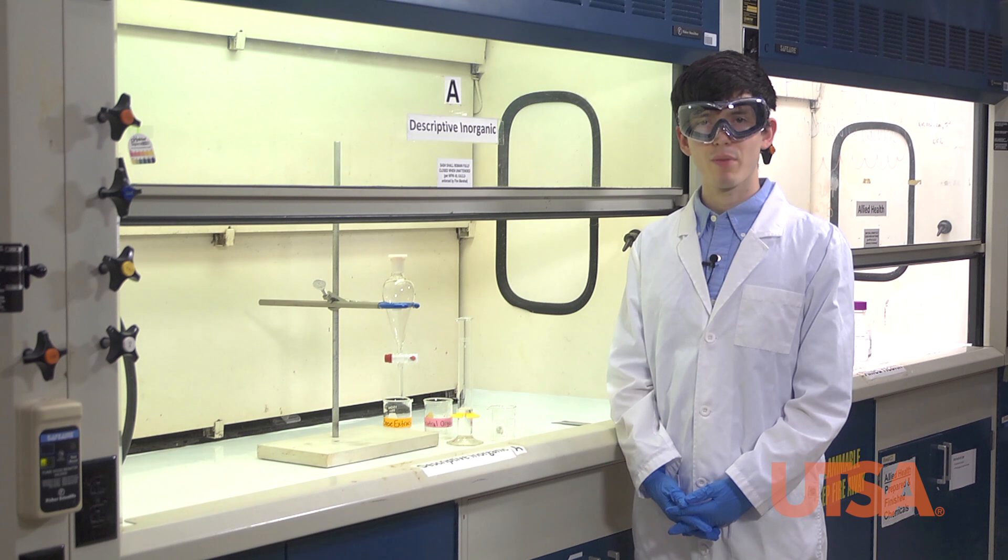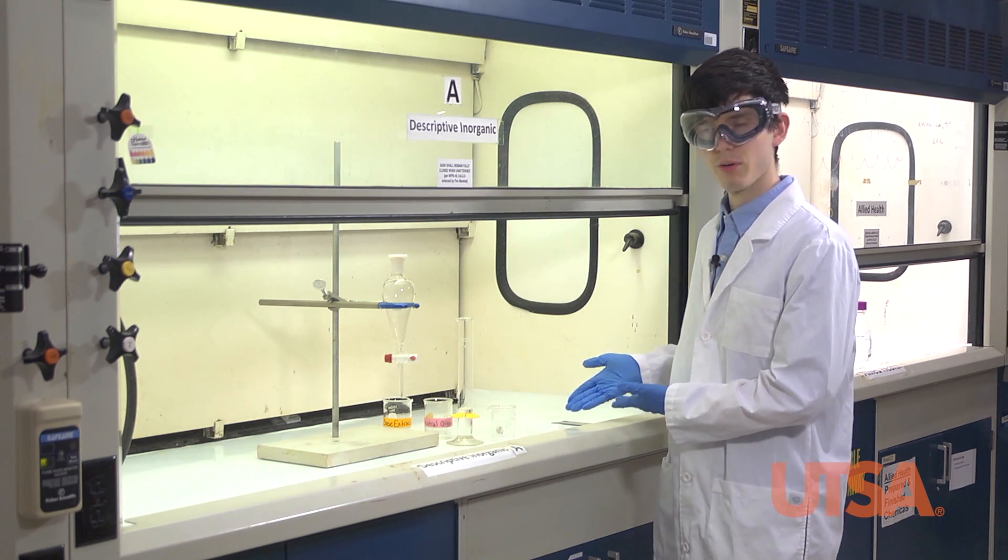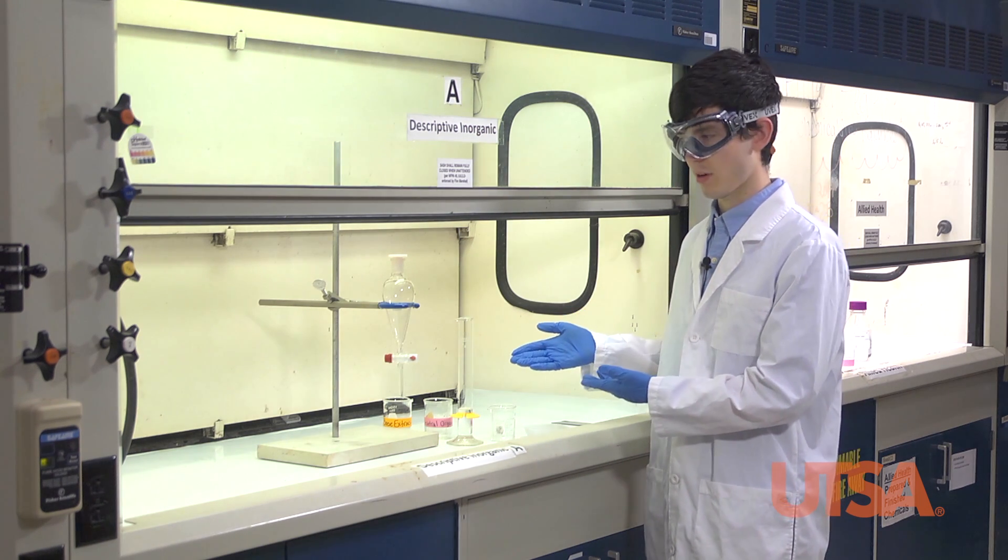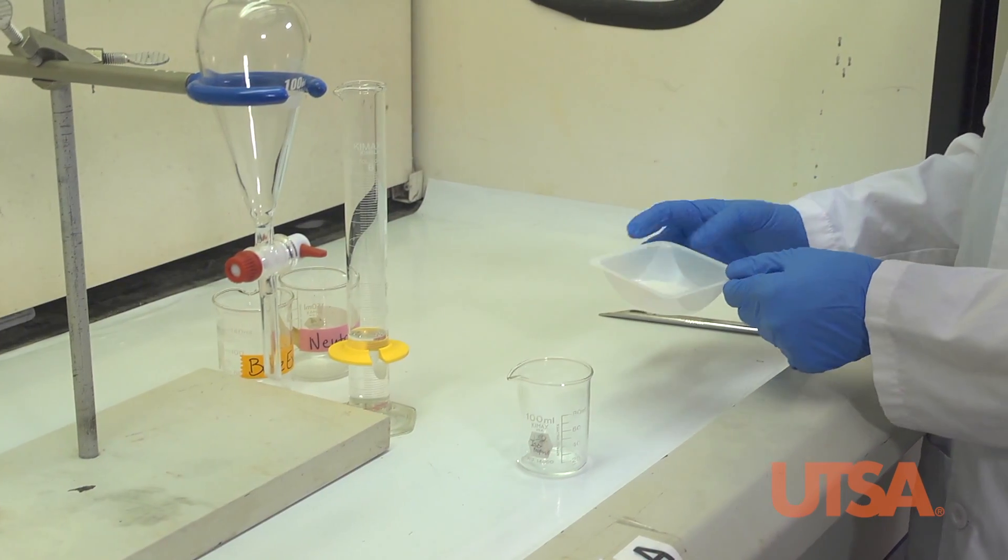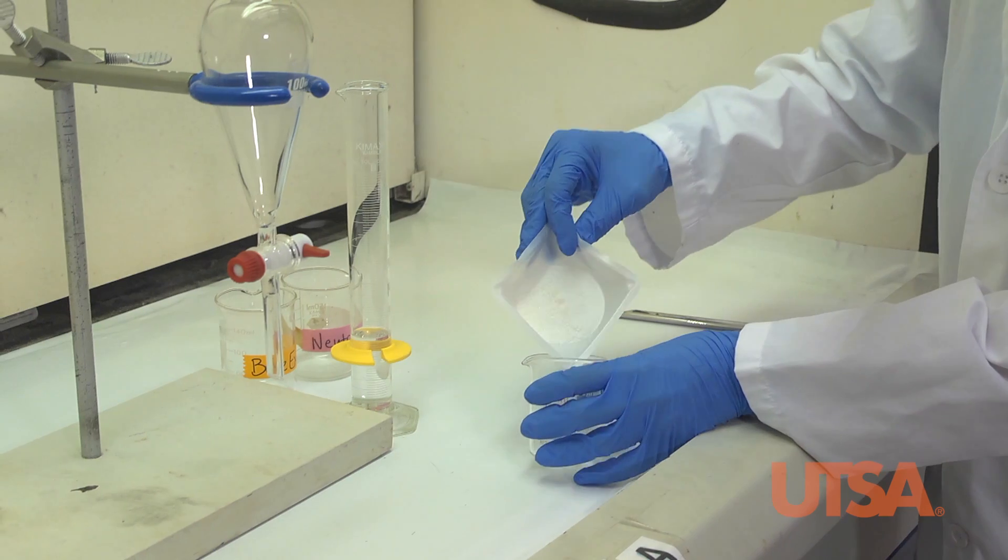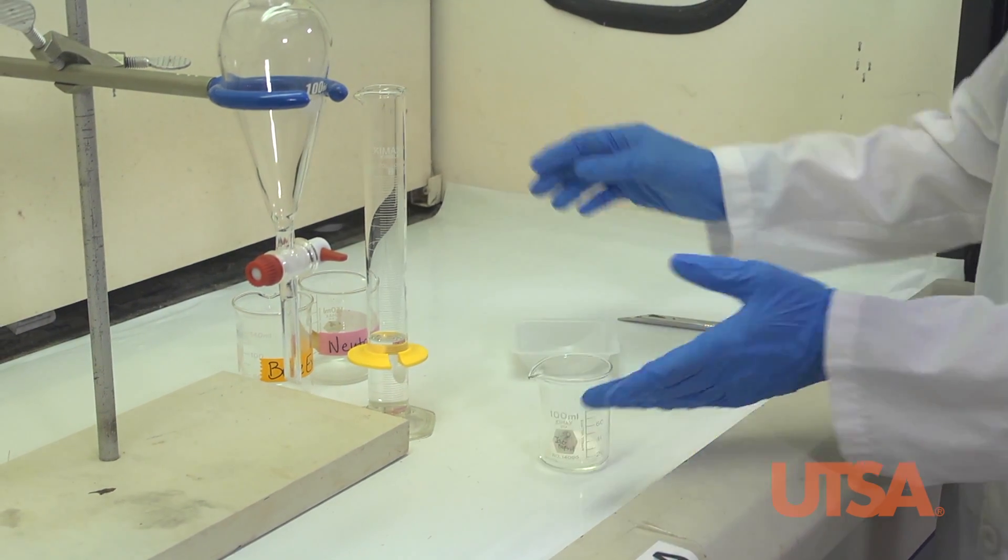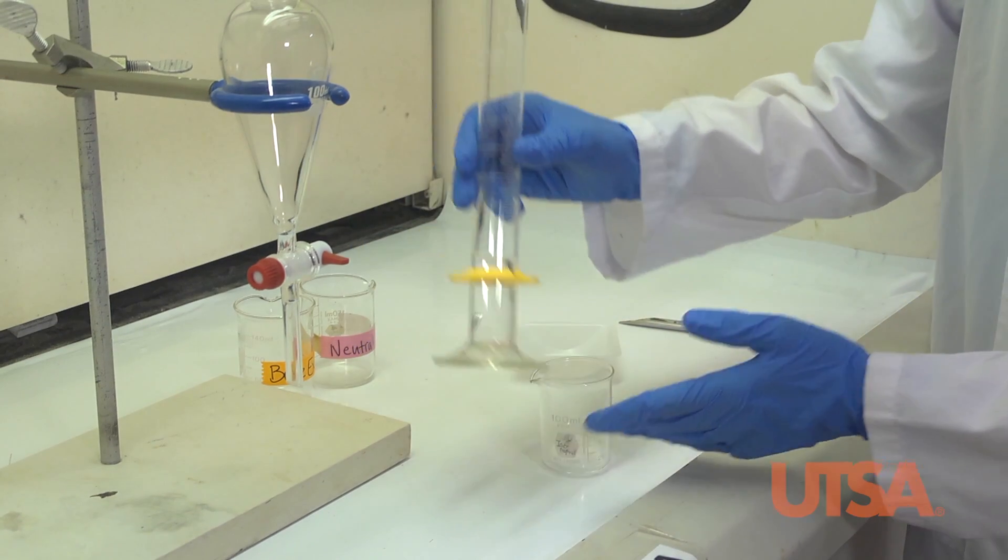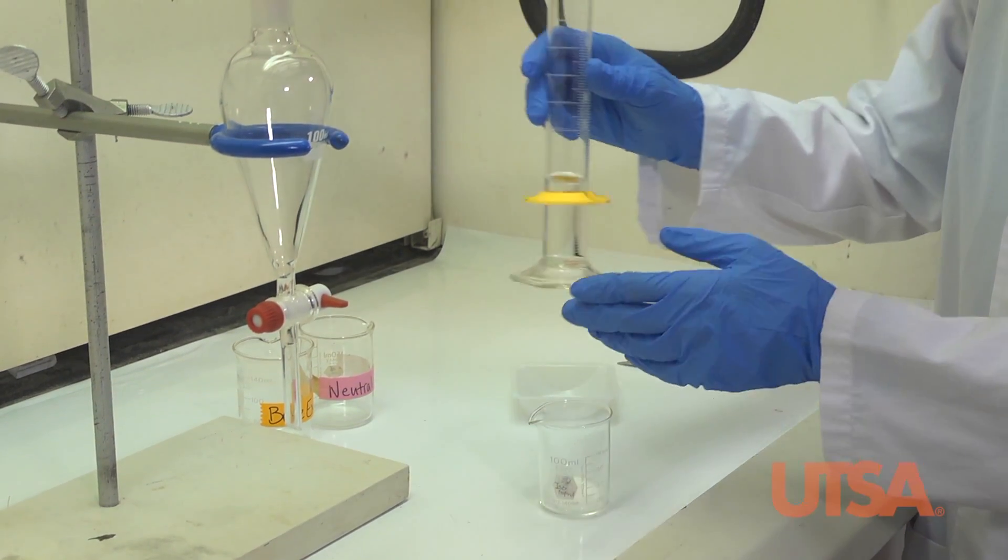For the first step of the purification technique, I will be dissolving 2 grams of the unknown compound with 30 ml of ether before transferring it to the separatory funnel. We will transfer the unknown compound into the beaker, and we will dissolve with ether. Ether is a volatile solvent and evaporates, so it is important to keep it inside the fume hood.